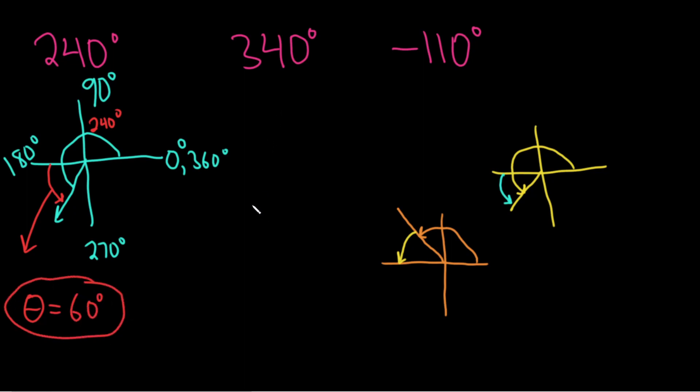Let's go ahead and do 340. 340 is way over in quadrant 4. It's way over here. That's 340 degrees. And the reference angle is going to be, again, the positive acute angle made with the terminal side of our angle and the x-axis. So it'll be right here.